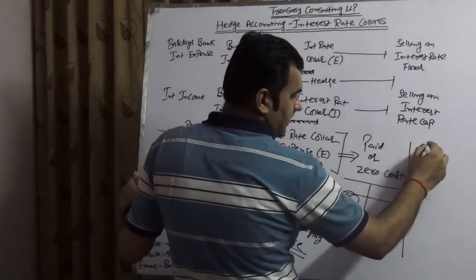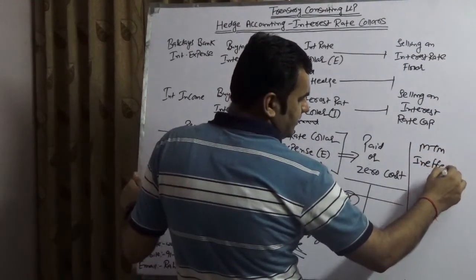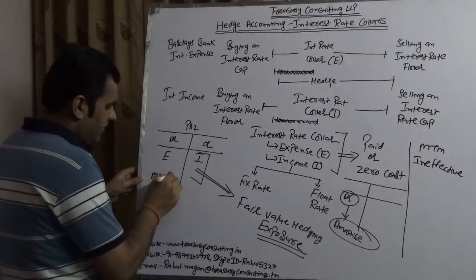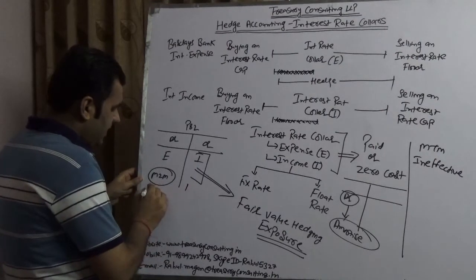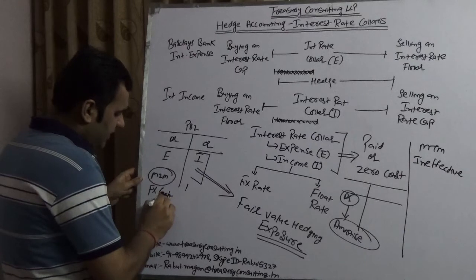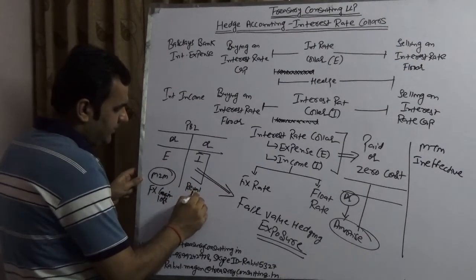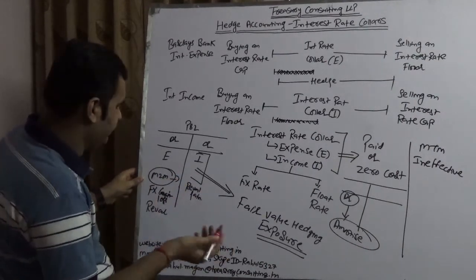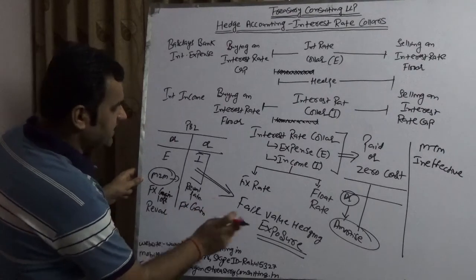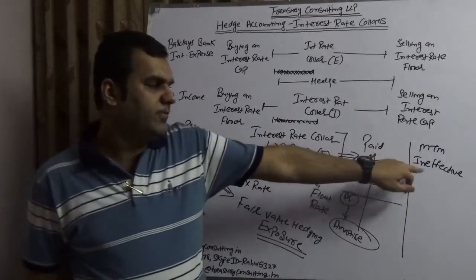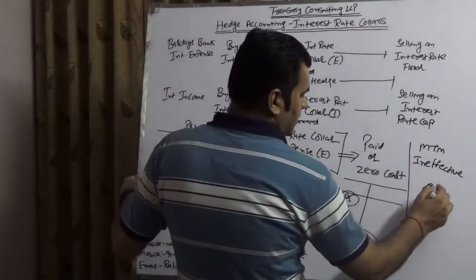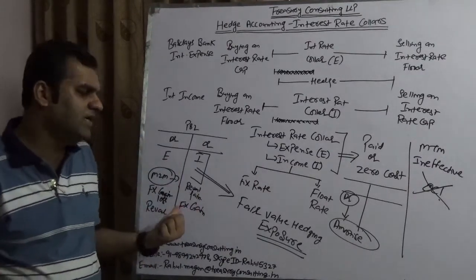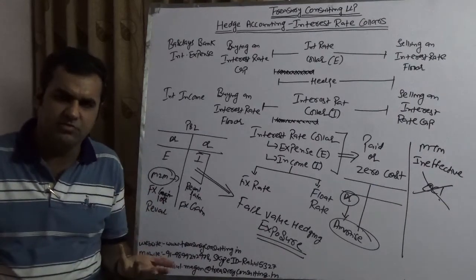The mark-to-market of fair value hedges is always ineffective in nature. If the M2M comes on one side, FX loss or gain will come on the other. Since this is a form of fair value hedge, all mark-to-market would be ineffective in nature and other comprehensive income has no role to play. As a company, you cannot put the mark-to-market in other comprehensive income — you have to take it in the P&L, either on the credit side or the debit side.